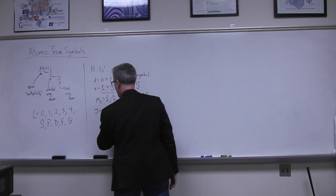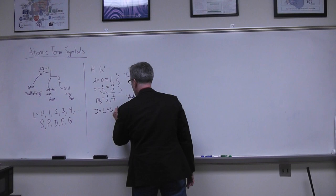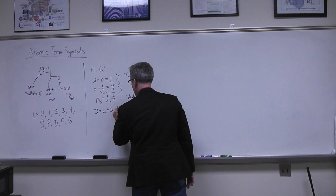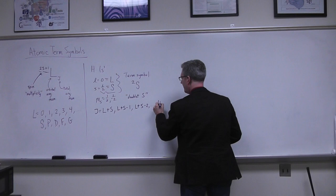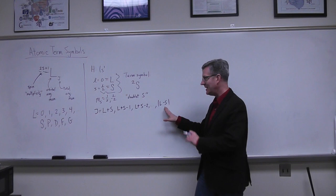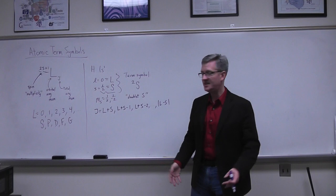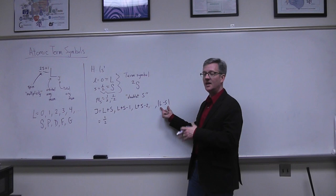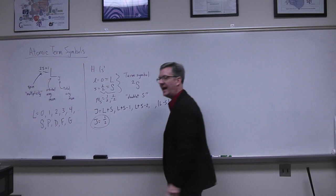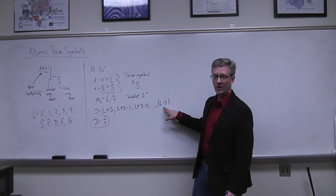The allowed values of J range from L plus S (maximum, constructive interference) down to |L minus S| (minimum, destructive interference), in integer steps. For the hydrogen 1s ground state, L=0 and S=1/2, so the maximum J is 1/2 and the minimum |L−S| is also 1/2. Therefore the only allowed value of J is 1/2.